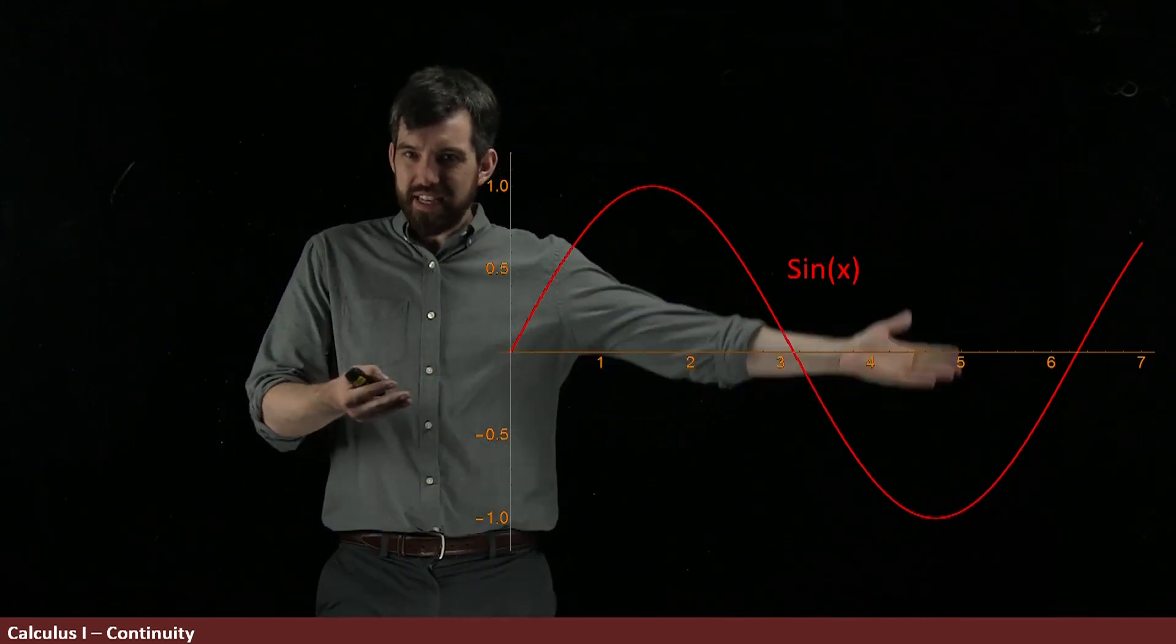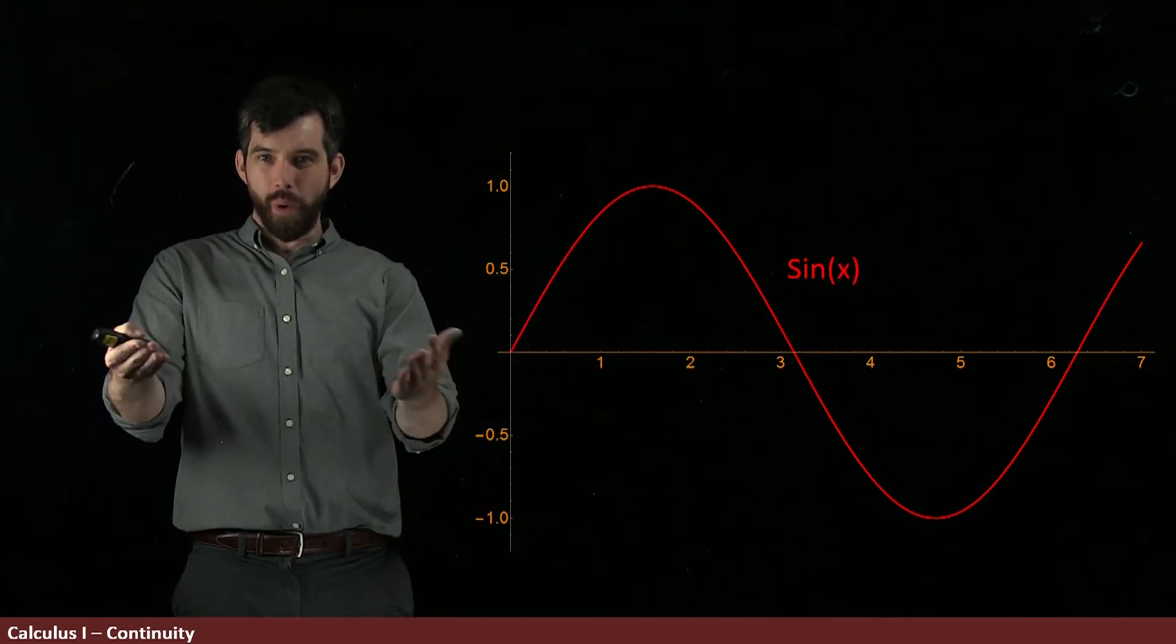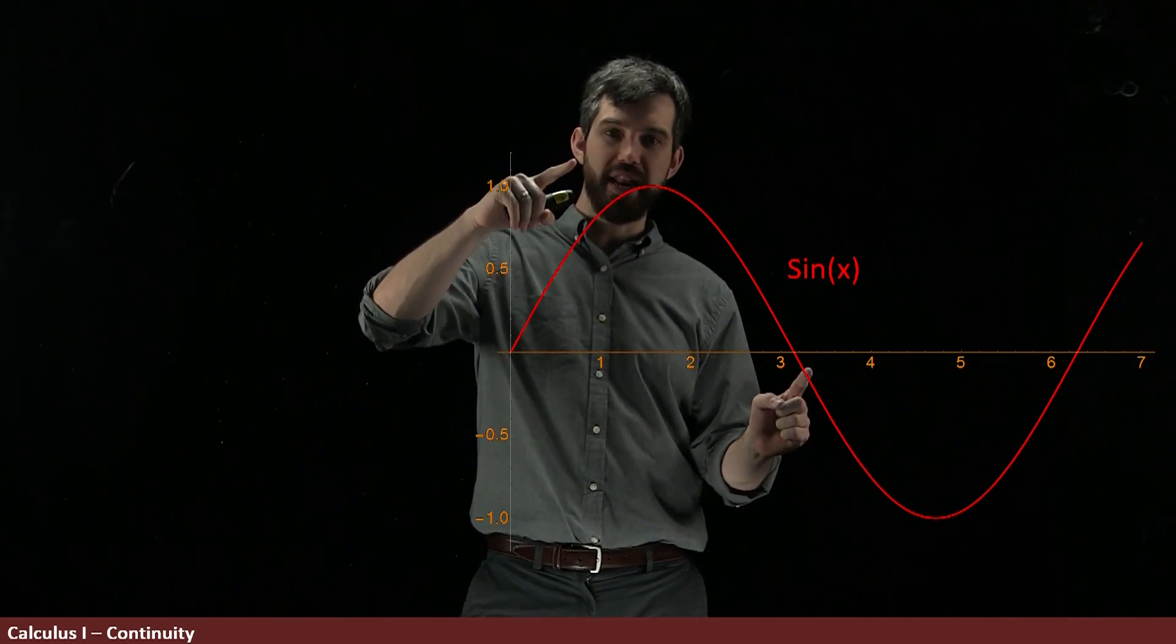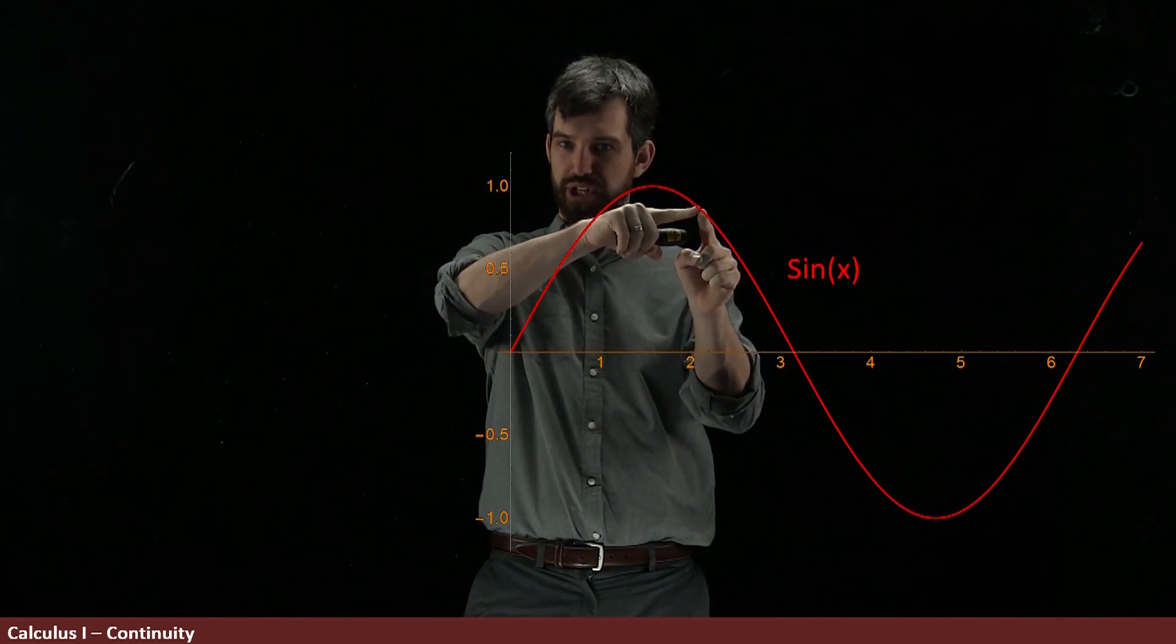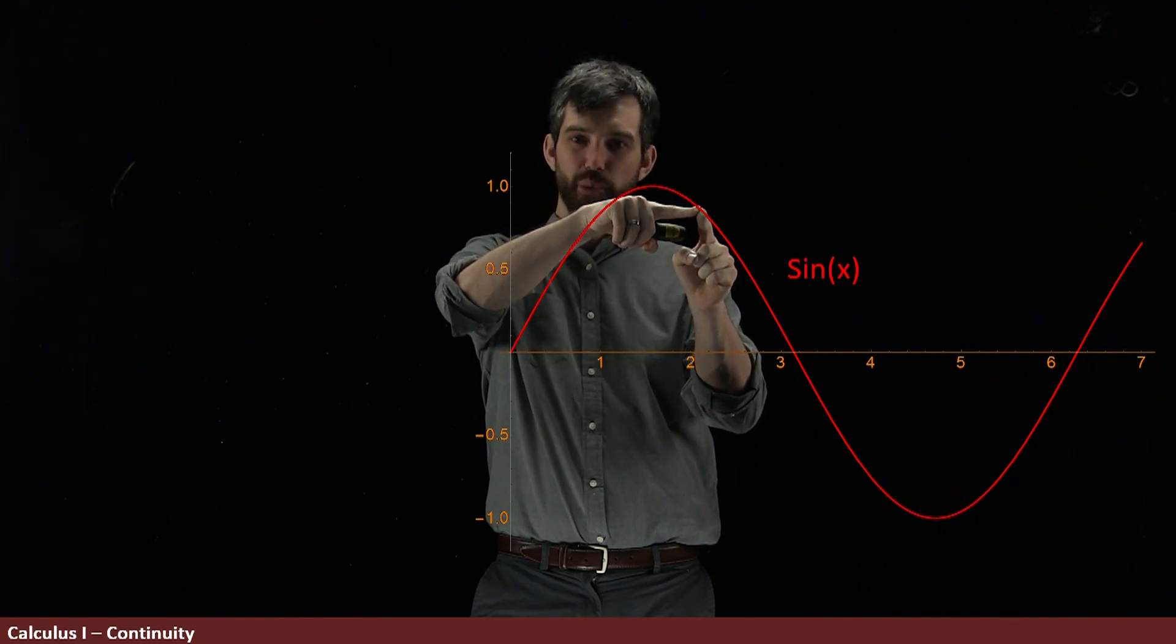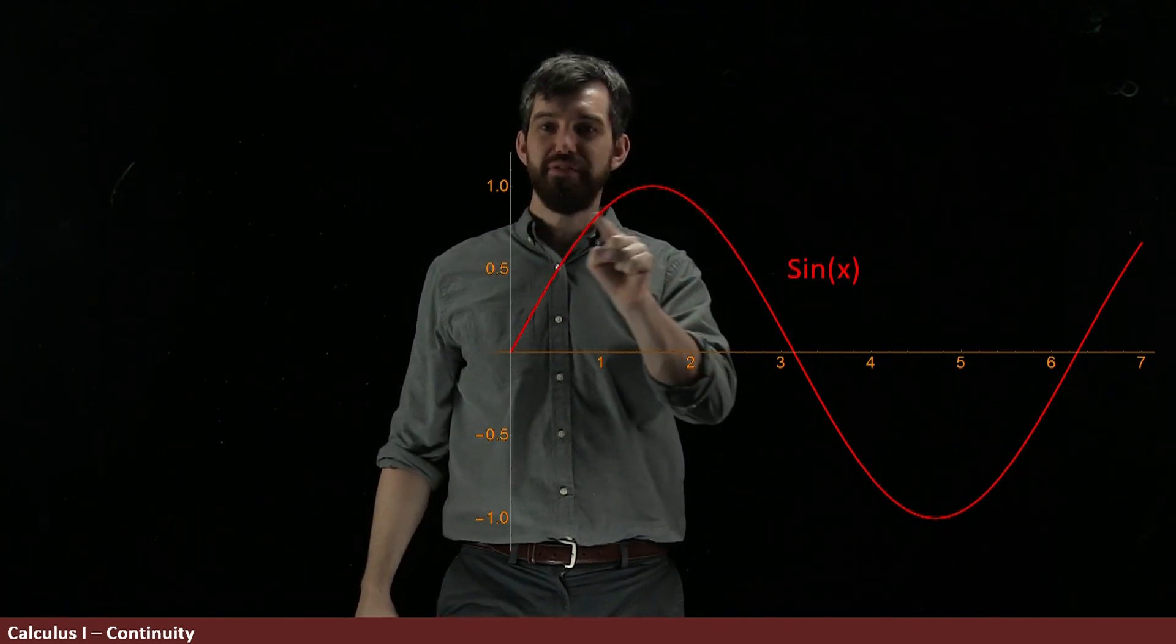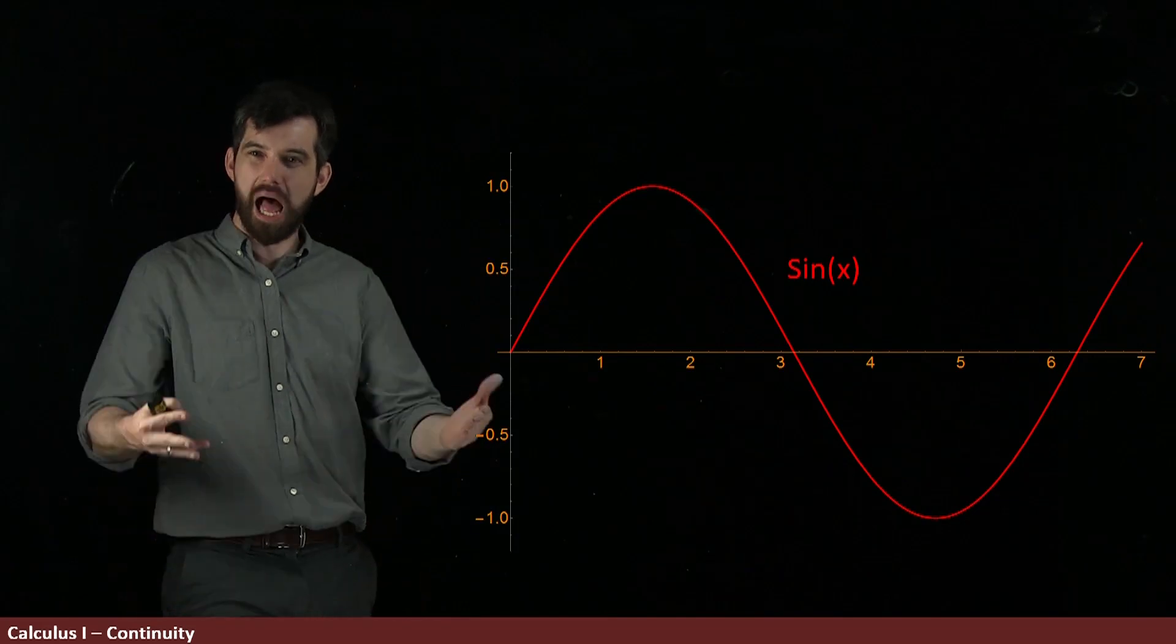Well, I think for this function sine of x, it's quite clear what the limit is. So if I imagine that I'm getting closer and closer to 2 from the right, and I can imagine I'm getting closer and closer to 2 from the left, what's the limit? Well, it's just whatever the height of that point is. It's just going to be sine of 2.